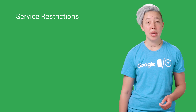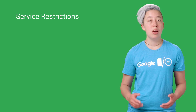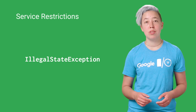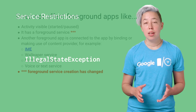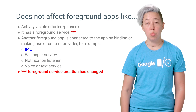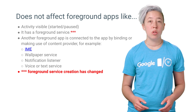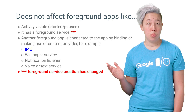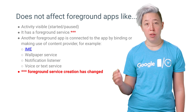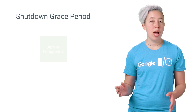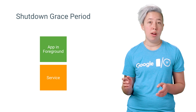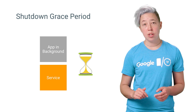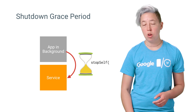First on the list of background behavior changes are services. Calling StartService from the background will cause an IllegalStateException. This does not affect services started when your app is visible and in the foreground, nor does it affect bound services. Here are a few more situations where the app is considered in the foreground. When your app moves from the foreground to the background, there's a short grace period before your service is shut down. The service shuts down as if it had called StopSelf.